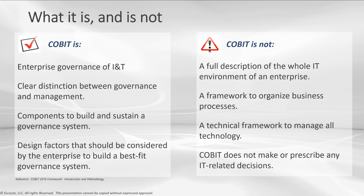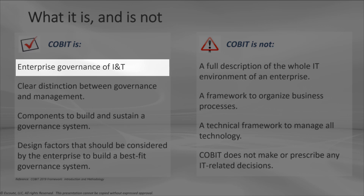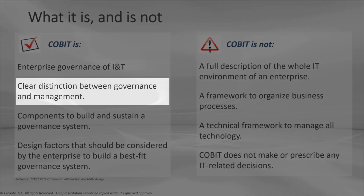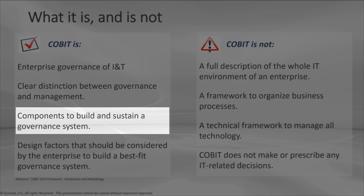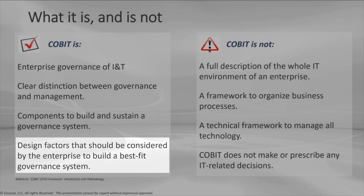It's important to understand what COBIT is and what COBIT is not. What it is is a framework for the enterprise governance of information and technology. COBIT offers a clear distinction between governance and management — formerly we used to say this was a separation, but you'll see why it's a distinction in a few minutes. COBIT offers components to build and sustain a governance system, and it provides design factors that you consider when building a best-fit or tailored governance system.